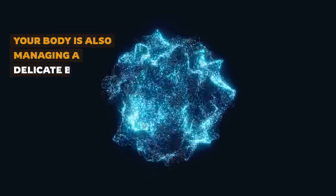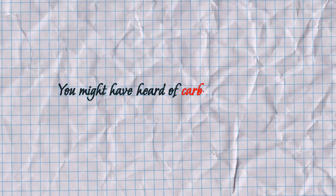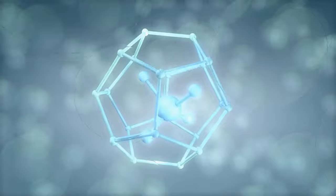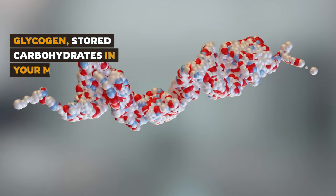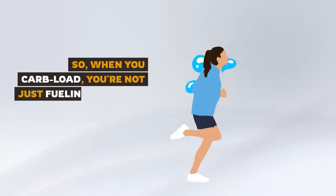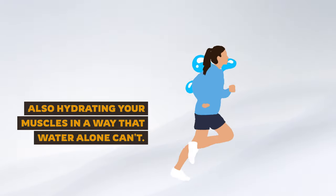Your body is also managing a delicate balance of hydration and electrolytes. You might have heard of carb loading, right? It's not just about energy, it's about optimizing your body's water levels. Glycogen, stored carbohydrates in your muscles, holds water. So when you carb load, you're not just fueling up, you're also hydrating your muscles in a way that water alone can't.